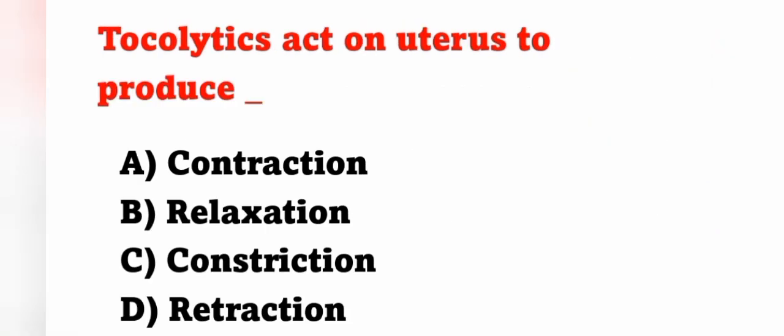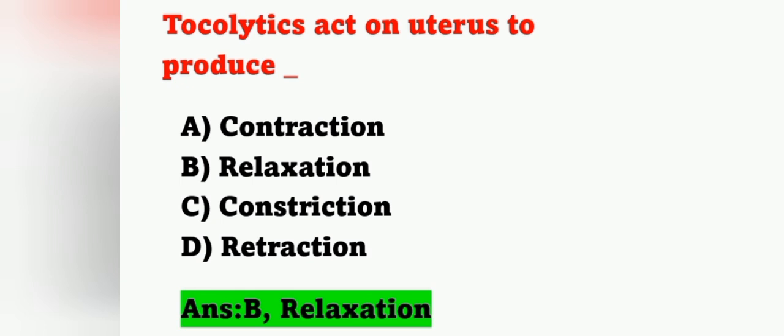Next question: tocolytics act on the uterus to produce — option A: contraction, option B: relaxation, option C: constriction, option D: retraction. Tocolytics are medications which act on the uterus to produce relaxation, so option B is correct. Tocolytics produce uterine relaxation and suppress uterine activity to prevent preterm birth.